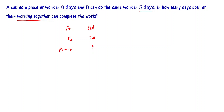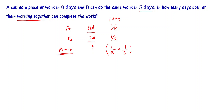To solve this problem: A can complete the work in 8 days, so in 1 day A does 1/8th of the total work. B can complete in 5 days, so in 1 day B does 1/5th of the total work. A plus B together in 1 day do 1/8 plus 1/5. Taking LCM as 40, this gives 5 plus 8 by 40, that is 13/40.